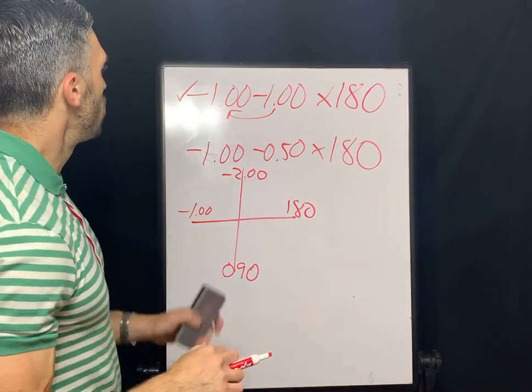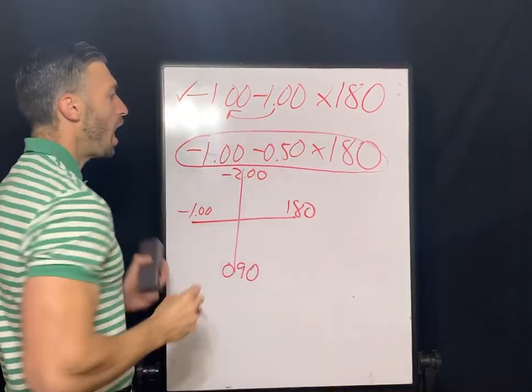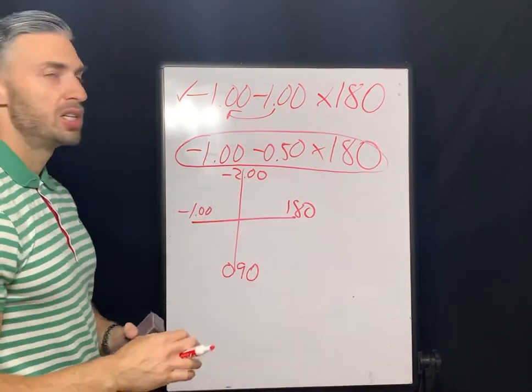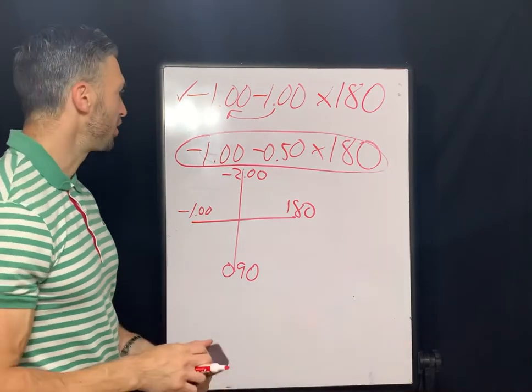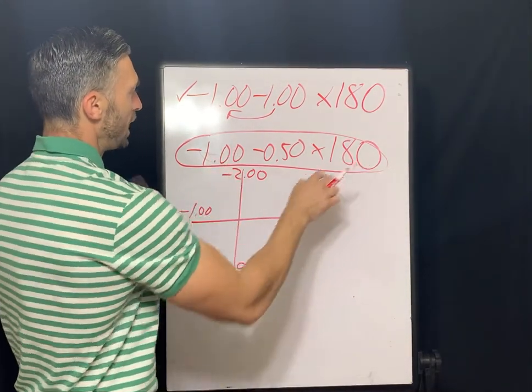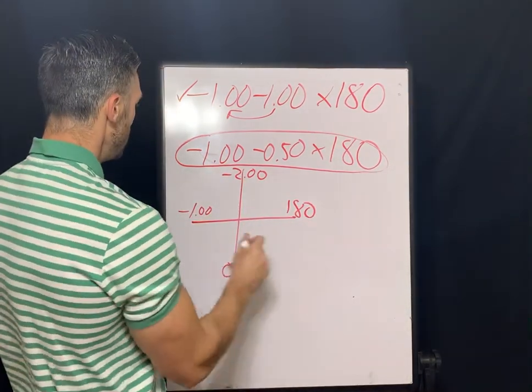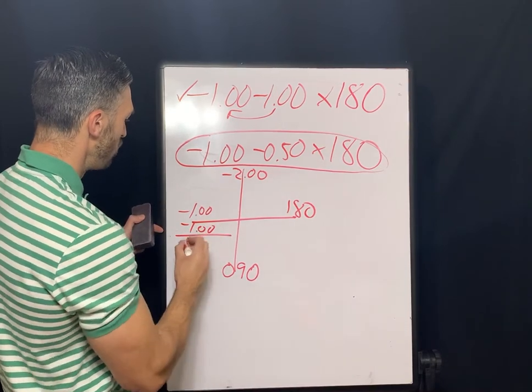So now what we're doing is we're putting this over-refraction on top of this power. So we're going to just do some basic addition here. So let's see, now we have a negative one over-refraction at 180, which means we're putting another minus one power on the 180. So when we add a negative one and a negative one, we get a negative two as our new strength along the 180.